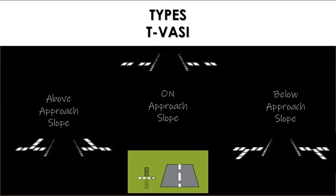The system is of variable intensity and will be displayed for use by both day and night. It is designed for use over ranges of at least four miles. The symbolic nature of the system is such that it may be linked to the instrument landing system glide path indicator.